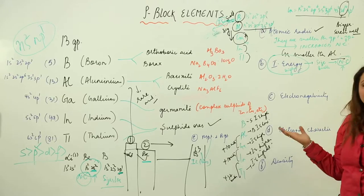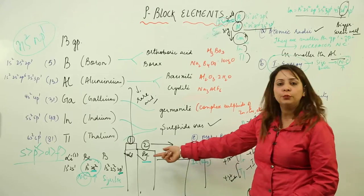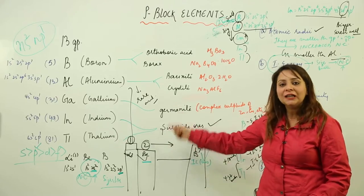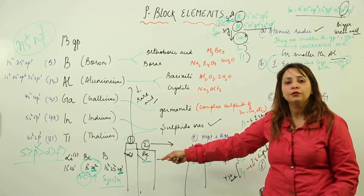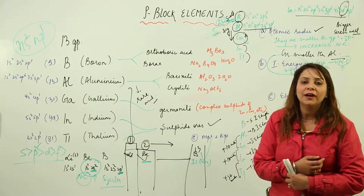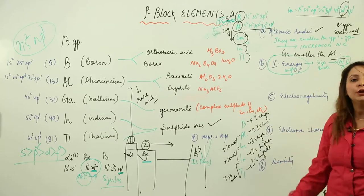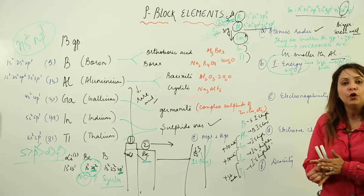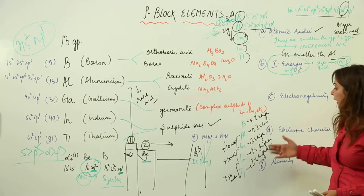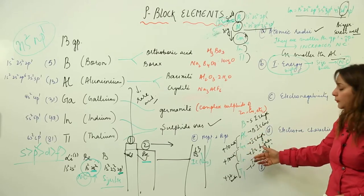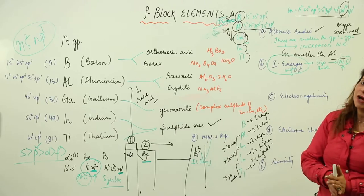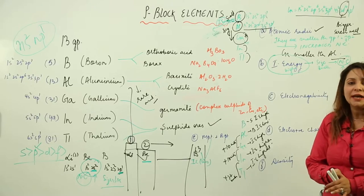To summarize ionization energy trends: Group 13 has lower first ionization energy than Group 2 because the electron is removed from p rather than s (s has more penetrating effect). Within the group, progressive filling of d and f orbitals — increasing nuclear charge by 10 units (Al to Ga), 18 units (Ga to In), and 32 units (In to Tl) — causes progressive increase in ionization energy going down.